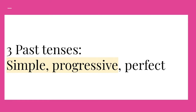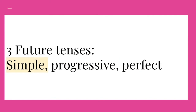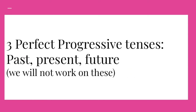You might notice that some tenses are highlighted, and some are not. There are three future tenses: simple future, future progressive, and future perfect. Only simple future is highlighted, because we are going to learn simple future tense, but not really work on future progressive or future perfect. We will look at those, but we're not going to study the three perfect progressive tenses: past perfect progressive, present perfect progressive, and future perfect progressive.